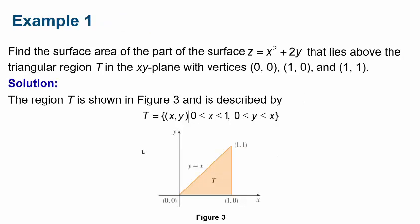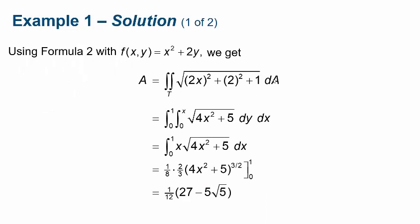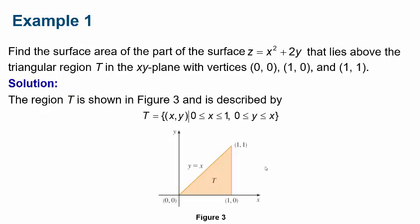Let's do one example. Find the area of the part of the surface z equals x squared plus 2y that lies above the triangular region T in the xy-plane with vertices (0,0), (1,0), and (1,1). When you set up these problems I really suggest you sketch it first. You can see the triangular region, and we're going to integrate y first because y is defined in terms of x — the line y equals x — and then x goes from 0 to 1.